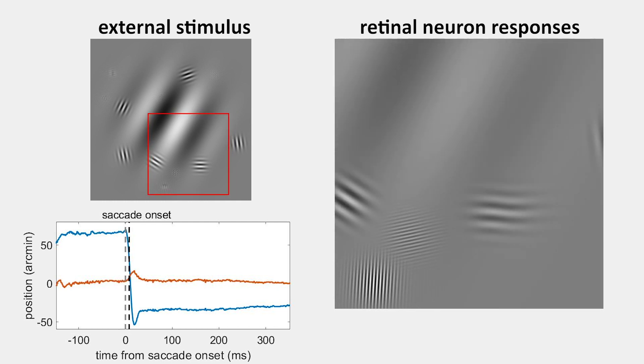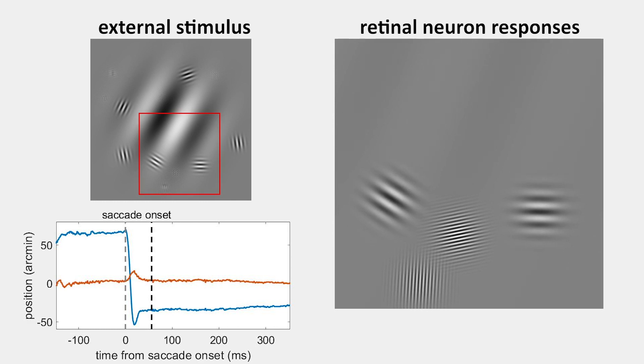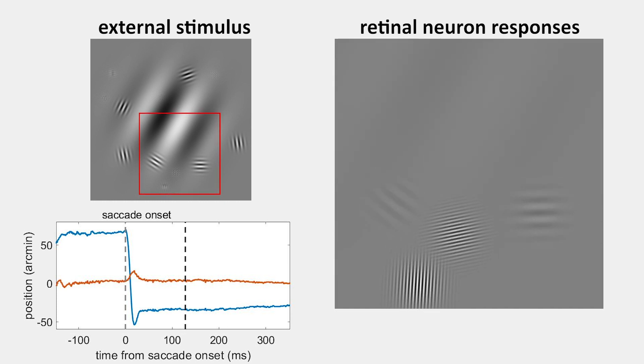As shown by this movie, the low frequency textures emerge first due to the saccadic transient. After that, high frequency gratings appear later in the fixation because of the temporal modulation delivered by the inter-saccadic motion of the eye.